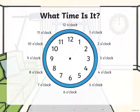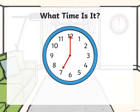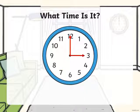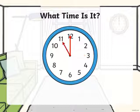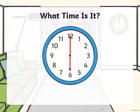What time is it? It is 7 o'clock. What time is it? It is 3 o'clock. What time is it? It is 11 o'clock. What time is it? It is 6 o'clock.